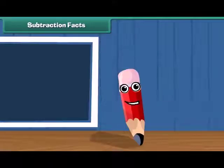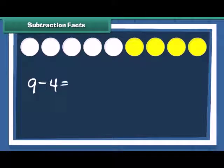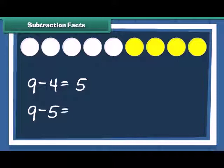Let me tell you about subtraction facts. We have 9 circles. Out of these, if 4 circles are colored, how many white circles are left? Thus, we have 9 minus 4, which is equal to 5, and 9 minus 5, which is equal to 4.